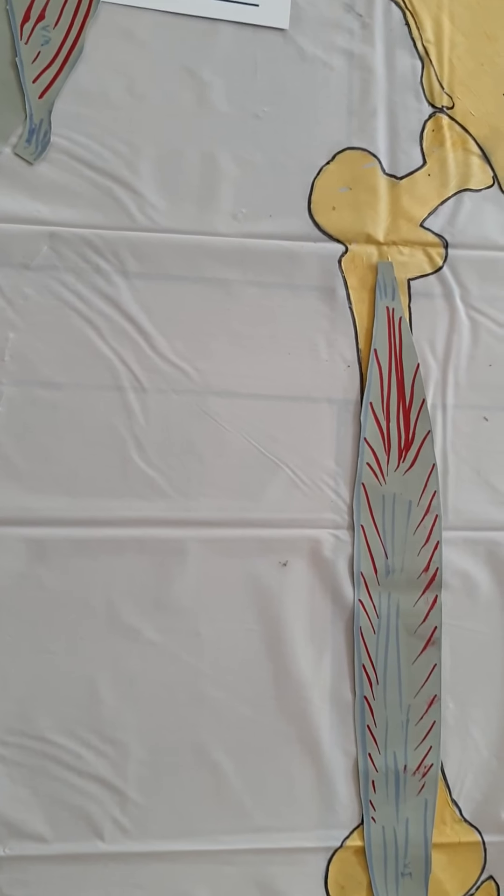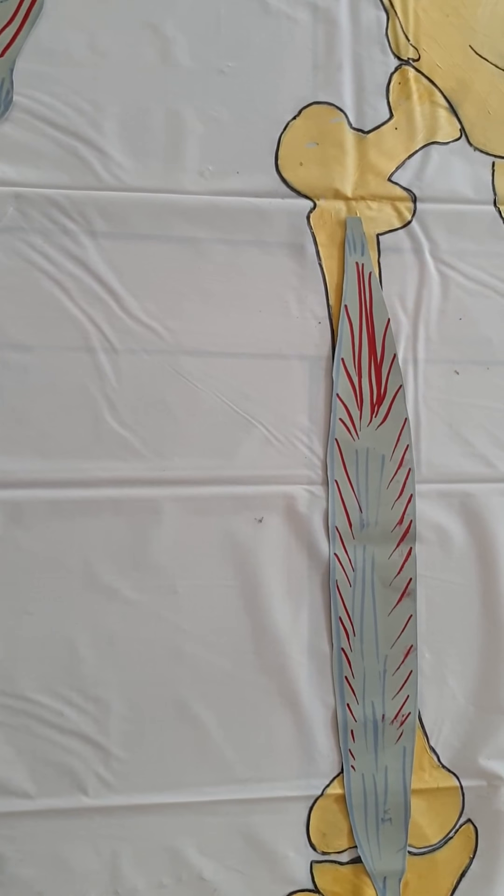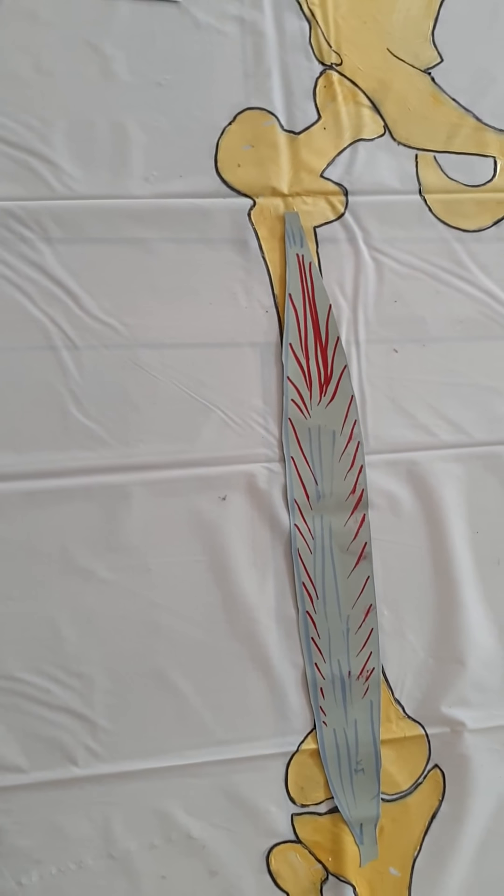So all of the quadriceps femoris muscles are involved in extending the knee, and they also help to control knee flexion when eccentrically contracted.